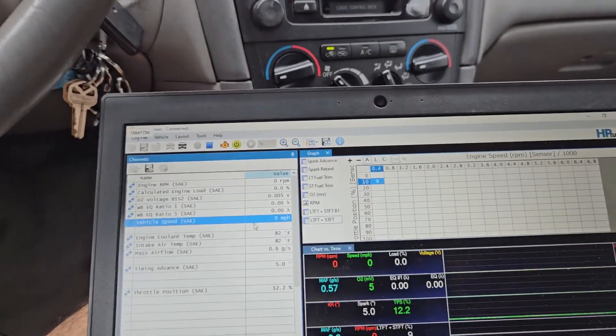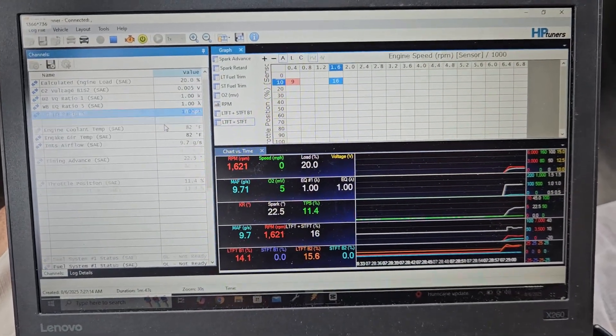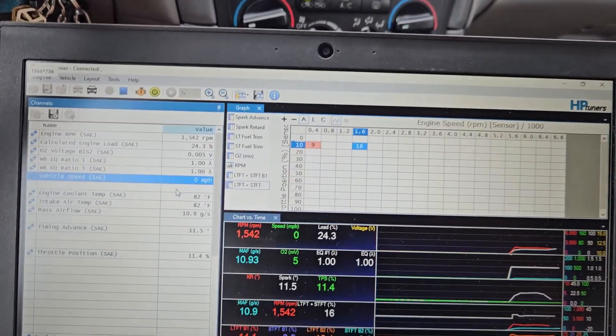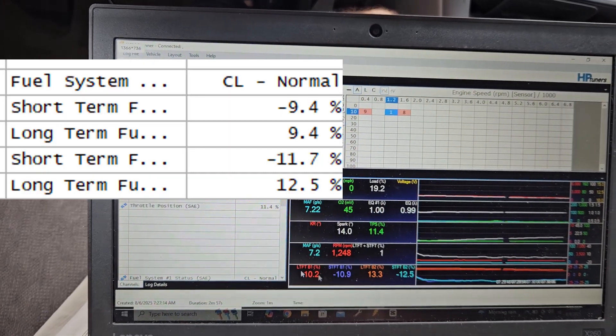Let's start the vehicle. And the first thing I'm going to want to look at are fuel trims. Since this sounds like a drivability issue and there are no DTCs, I want to see what my trims are at. They appear to be okay. They're canceling each other out.